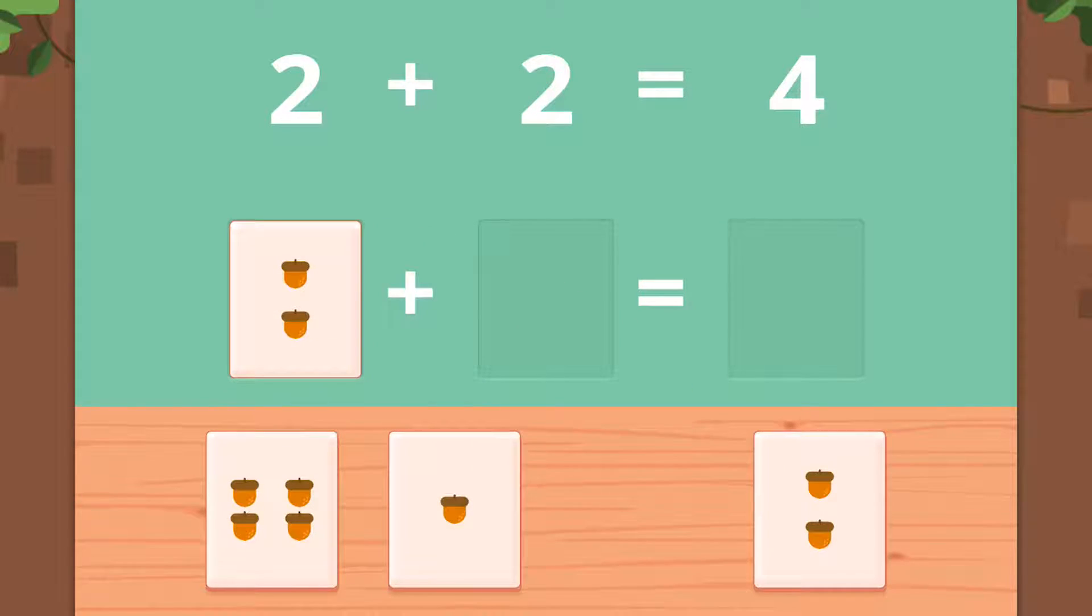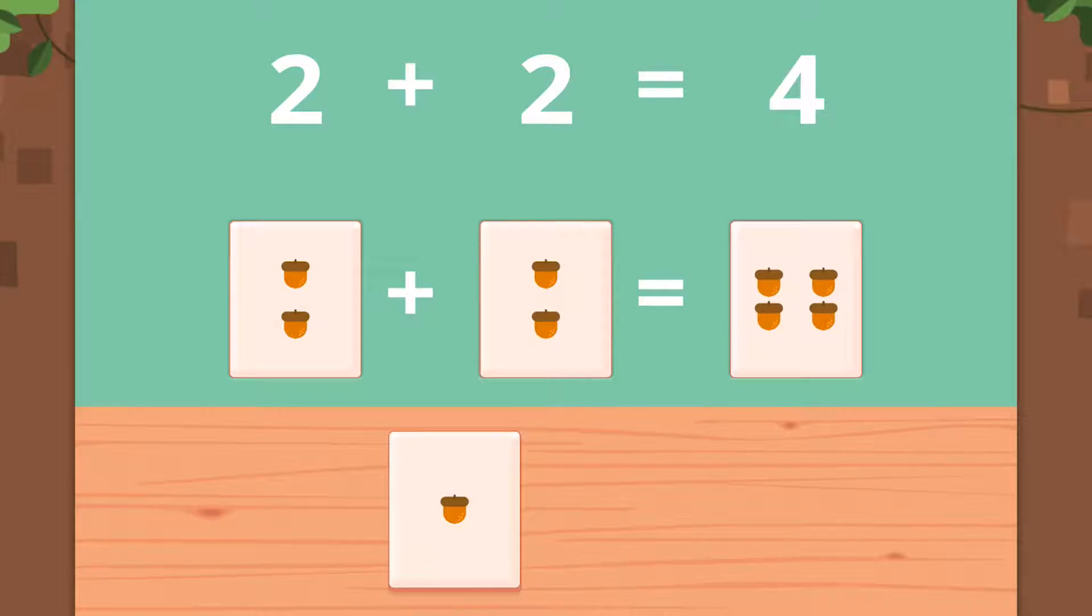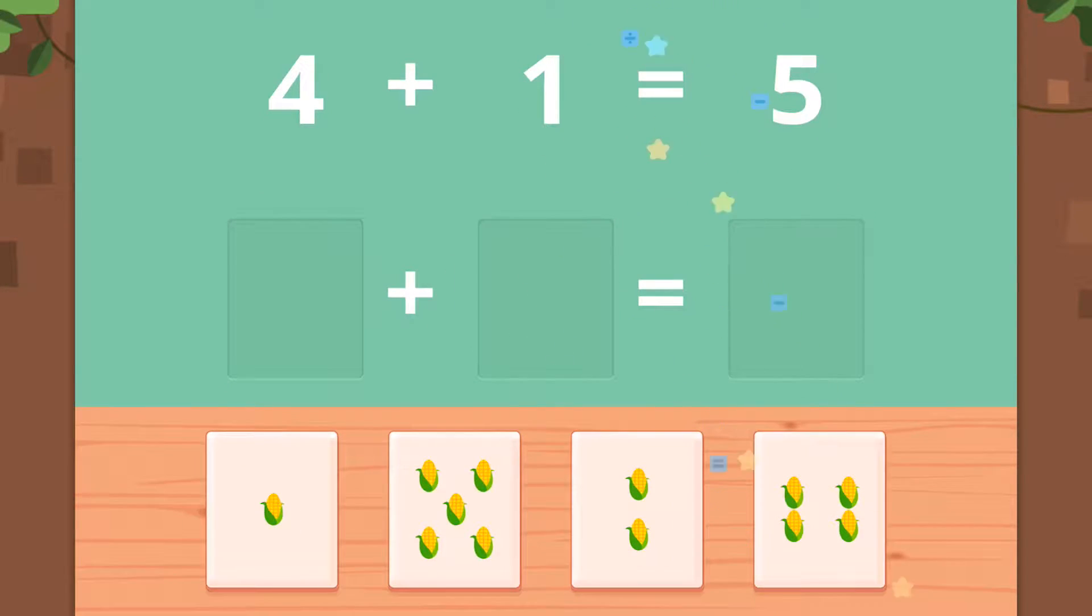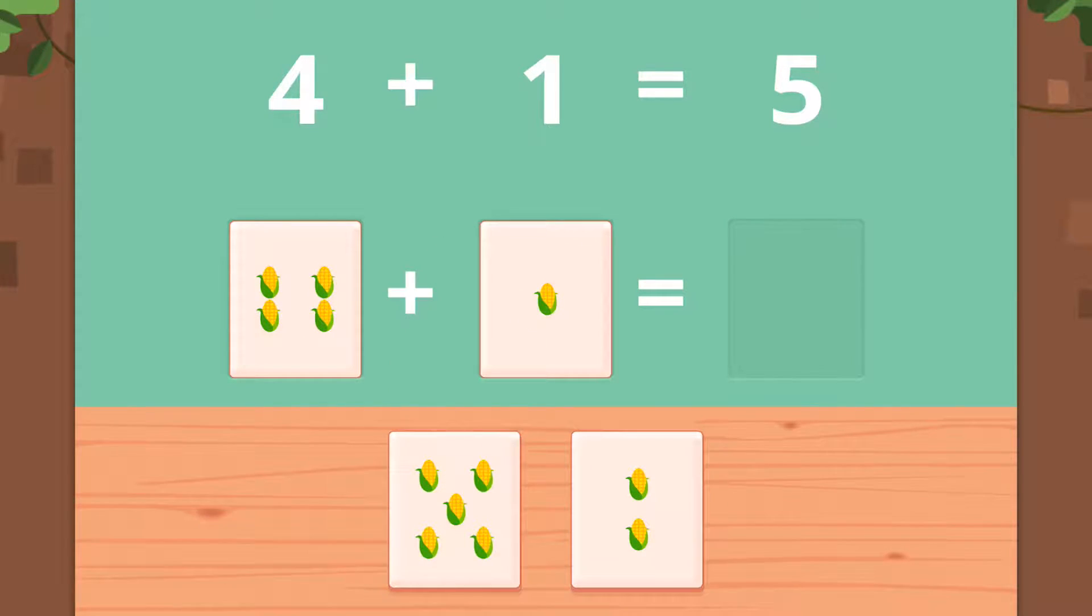Two, two, four. Two plus two equals four. Now four plus one equals five. Four plus one equals, four plus one equals five. Nice.